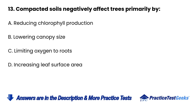Question 13. Compacted soils negatively affect trees primarily by: A. Reducing chlorophyll production. B. Lowering canopy size. C. Limiting oxygen to roots. D. Increasing leaf surface area.